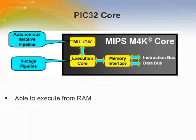Another point to note is that the PIC32 core can execute from RAM. Typical Harvard architectures do not allow execution from RAM, but the PIC32 includes a special bus matrix configuration that allows it to make part of the RAM executable.